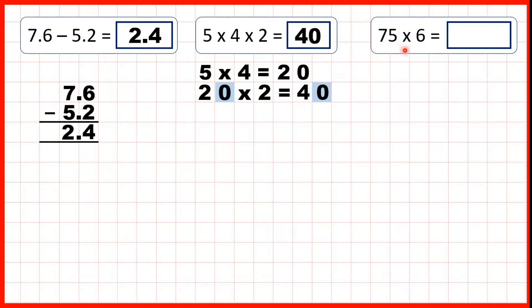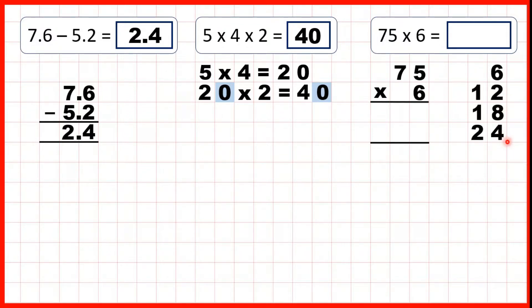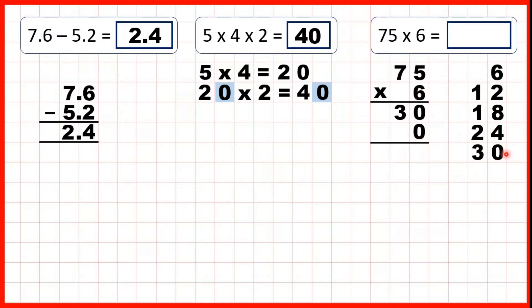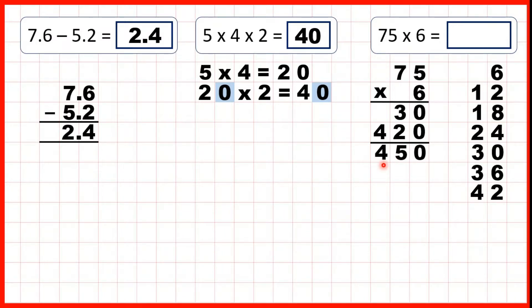75 times 6. So, we need to use column multiplication. 5 times 6 is 30 — if we don't know, we can count: 6, 12, 18, 24, and the 5th multiple of 6 is 30. Now, we need to work out 7 times 6, but because the 7 is in our 10s column, we need to write a 0 in our 1s first. 7 times 6 — if we don't know, 6 times 6 is 36, and 7 times 6 is 42. Finally, we can just add up our answer lines. So, we have 450.